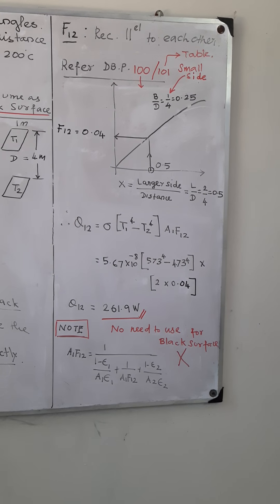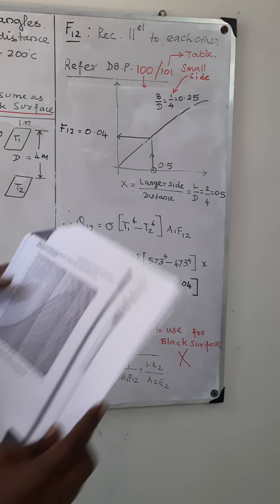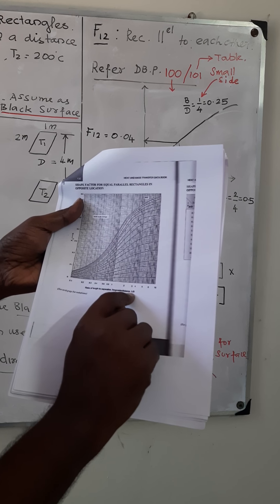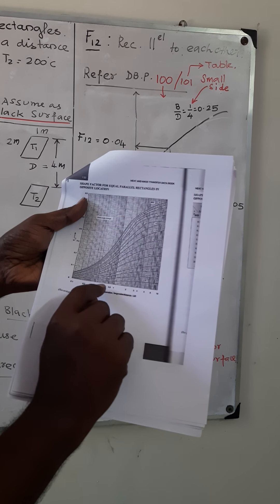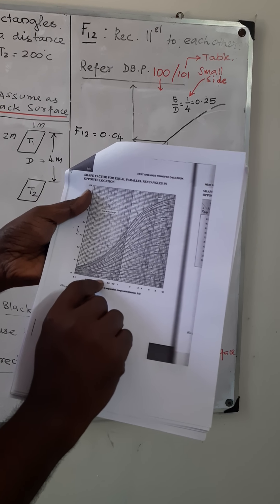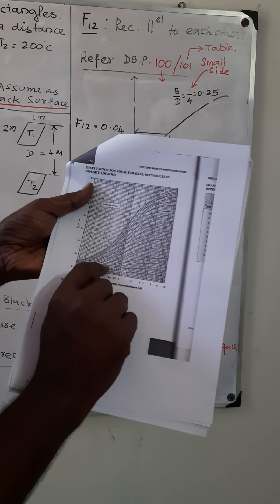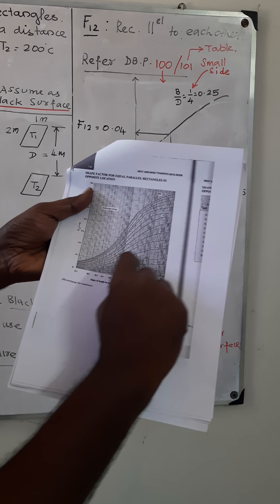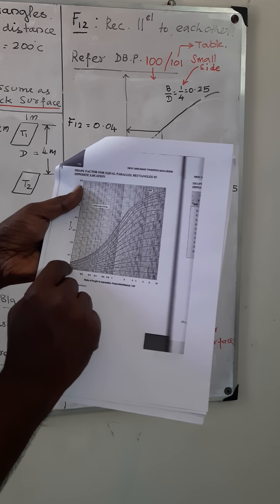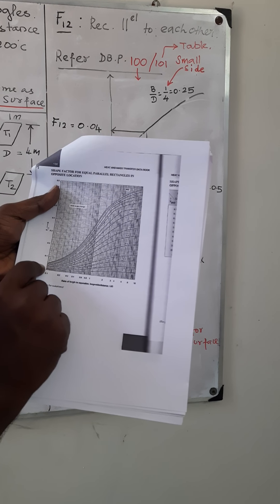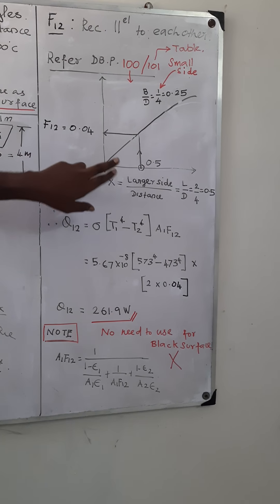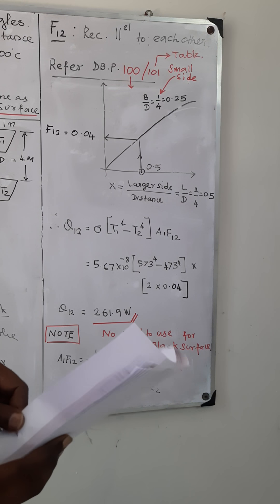This is the graphical method to find the shape factor for a rectangle. This is the actual graph here. You get L/D here. Fix your L/D as 0.5 and go vertically upwards until 0.25, then go horizontally to the left side to get 0.04. So this is the graphical method.